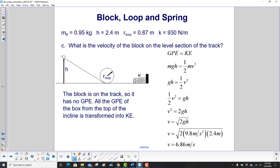Now we want to find the velocity of the block on the level section of the track. And that wouldn't matter if you came down like this and found the velocity here. This velocity here will be the same as this. There's no GPE down there, we're assuming that's zero, so all the GPE of the box from the top of the incline is transformed into KE.